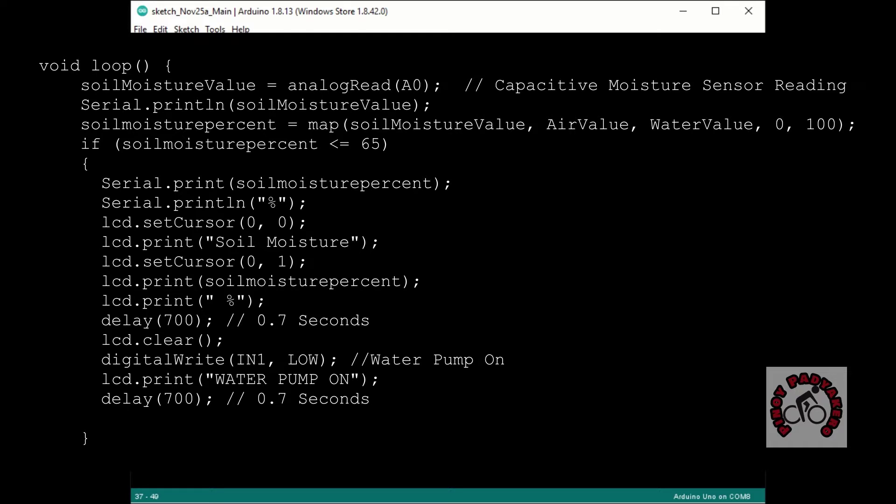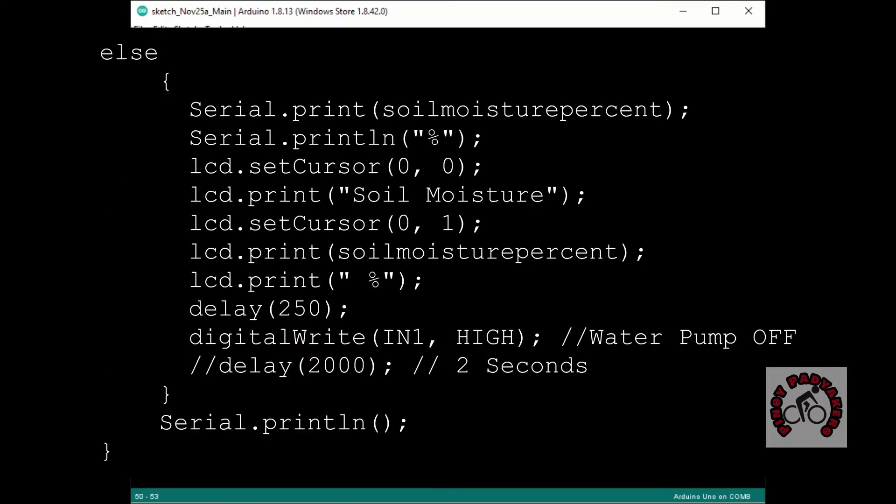The LCD display is utilized to indicate the status of the system by displaying the current soil moisture level if the system is not pumping water.